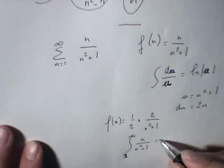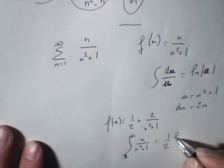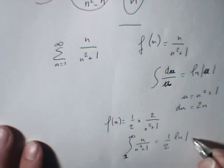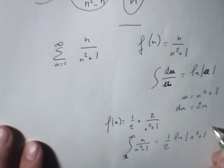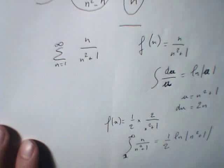n divided by n squared plus 1. So if you integrate f of n divided by n squared plus 1, you will have 1 half of ln of absolute value of n squared plus 1. This is interesting.